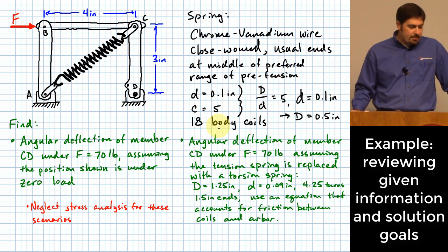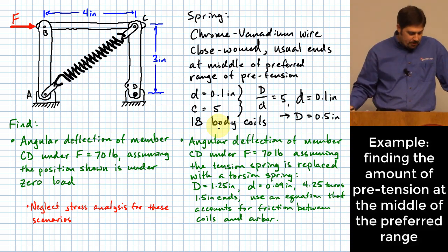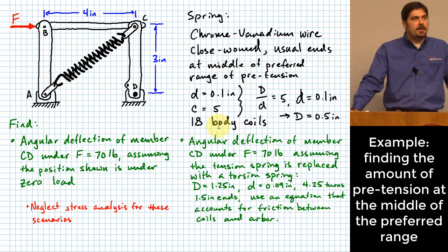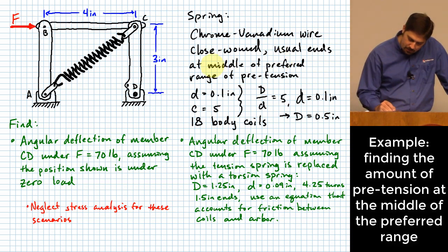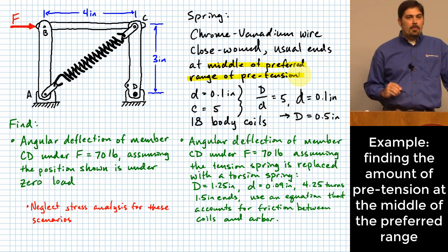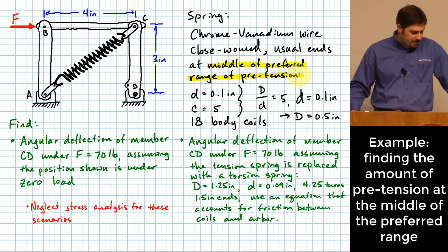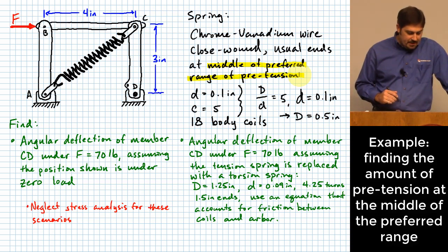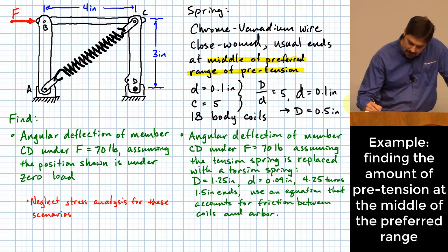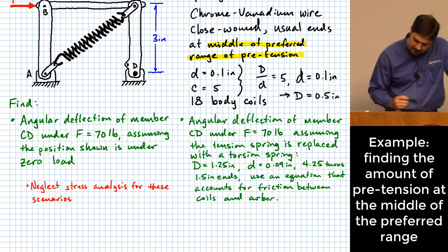Let's start with the most new concept: pre-tension in an extension spring. The problem states we want the spring at the middle of the preferred range of pre-tension. On page 537, equation 10-41 tells us what the torsional stress should be when we are at the middle of the preferred range of pre-tension.